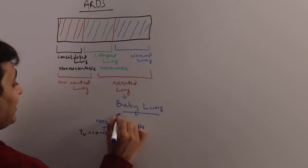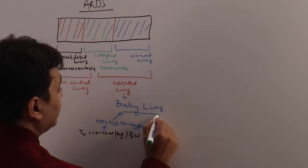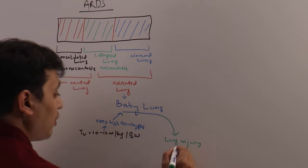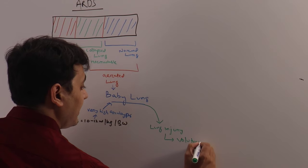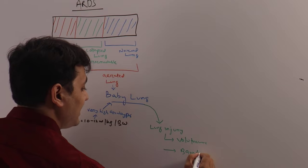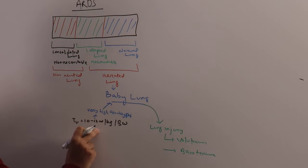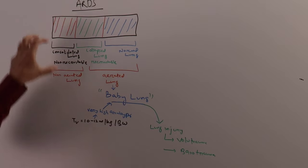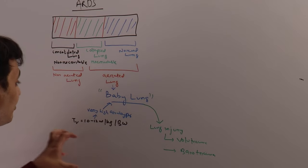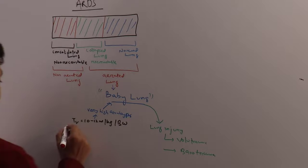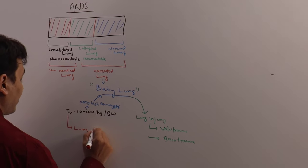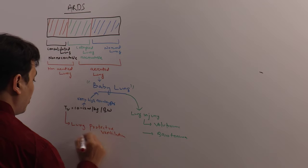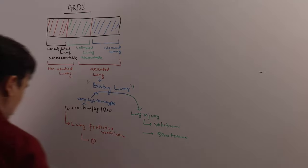This will create very high airway pressure delivered to the baby lung, resulting in lung injury, because you are giving a very high volume — producing volutrauma and barotrauma. You are providing a larger volume and larger pressure to a smaller lung — that is the baby lung concept. So in ARDS, you are dealing not only with a stiff lung but also a small lung, and we have to take care of both.